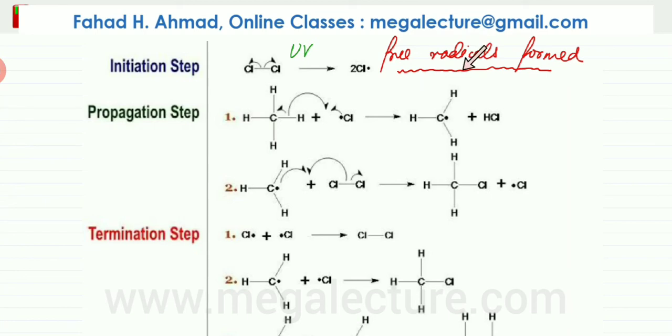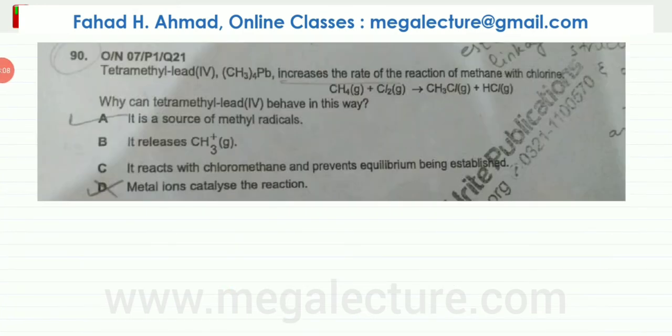So the entire reaction depends on free radical formation. Now, the question that we were discussing, this question over here is asking for the use of tetramethyl lead. Why does it increase the rate of this reaction?